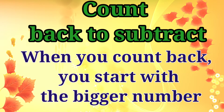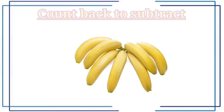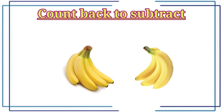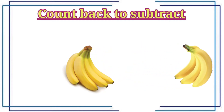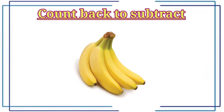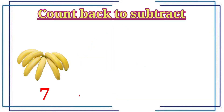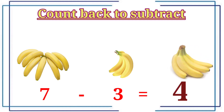Now I will show you some examples. Here, one bunch of seven bananas. If I take away three bananas with me. How many bananas are left now? Let's count: one, two, three, four. Four bananas are left. Seven minus three is equal to four.